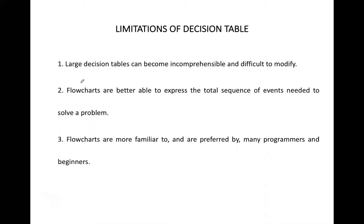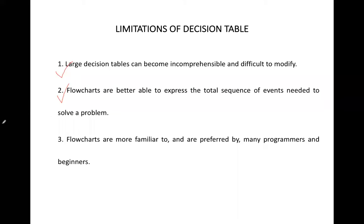Now talking about the limitations: first, as the table grows larger it becomes more difficult to modify. Second, flowcharts can easily represent the sequence of an entire system and cover all events in order, but decision tables do not have this provision. Third, programmers and analysts are less familiar with decision tables because flowcharts have been used for a long time and people prefer them over decision tables.